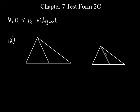What does it mean to be a median? It goes from here and it hits at the midpoint, right. So that's a midpoint right there. That means these two segments are equal to each other, and it means that these two segments are equal to each other. That means it's a median.